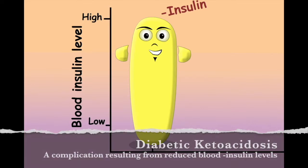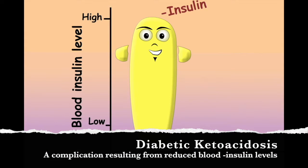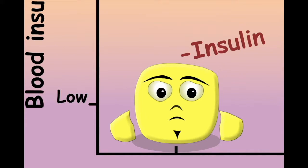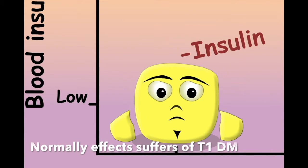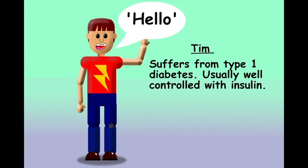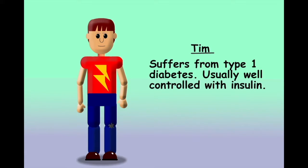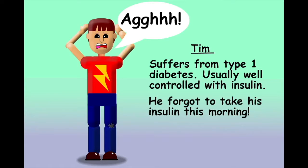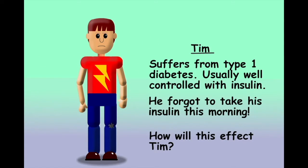Diabetic ketoacidosis, or DKA, results from the body having insufficient insulin available to meet its needs. This is nearly always a result of type 1 diabetes. Tim normally manages his type 1 diabetes well, however he has an important meeting at work today and is feeling distracted. Unfortunately he left home without remembering to take his insulin. To understand why this is a problem for Tim we need to have an understanding of the roles insulin performs in the body and what will happen if these roles aren't performed.